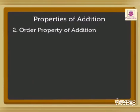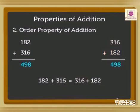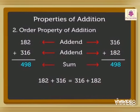Order property of addition. Let us take a number 182 and 316. When we add 182 and 316, we get the sum 498. Now, let us change the order of addends. Let us add 316 and 182. Again, we get the sum 498. Hence, 182 plus 316 is equal to 316 plus 182. Thus, we know the changing of addends does not change the sum. We can say that the addition is commutative.